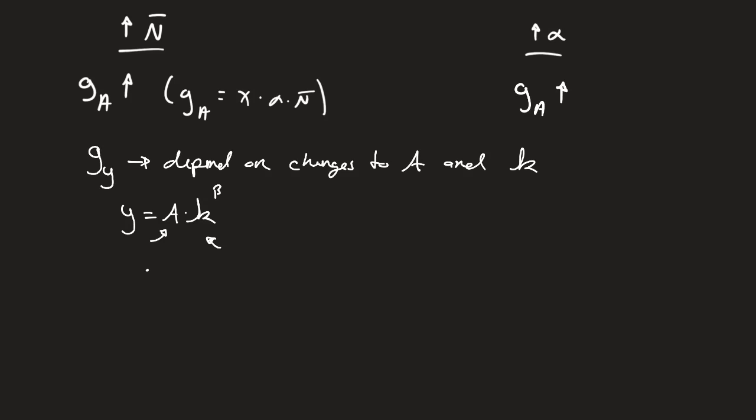On the n̄ side, L sub P — the number of workers producing goods and services — is going to go up, holding all else constant. For example, if we bring in a bunch of refugees into one area, a portion go towards producing goods and services and another portion go towards producing ideas. So the number of people producing goods and services has increased, which means capital per worker producing goods and services is going to decline.